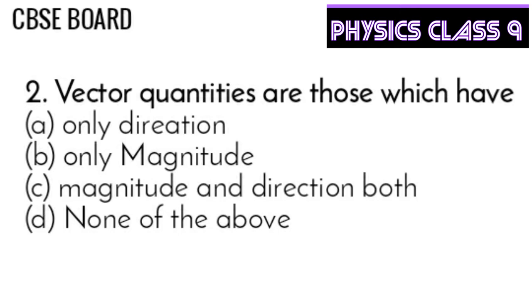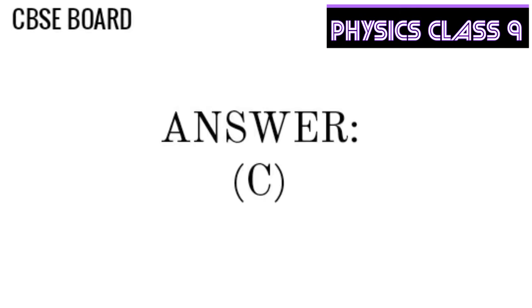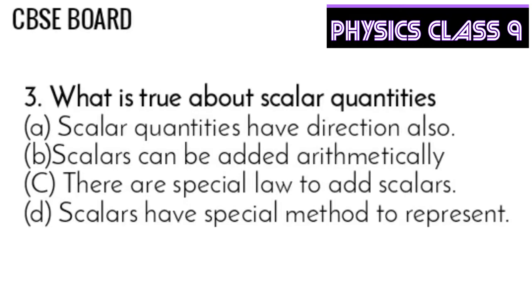Question 2: Vector quantities are those which have only direction, only magnitude, magnitude and direction both, or none of the above. If you need more time, pause the video. The answer is C — magnitude and direction both.